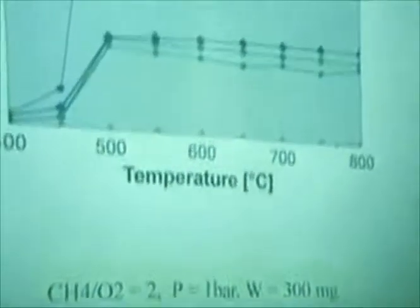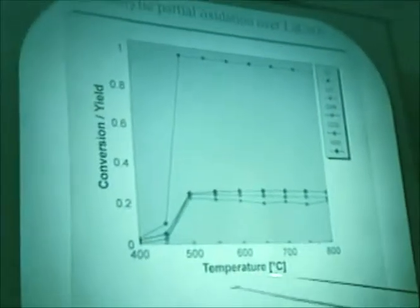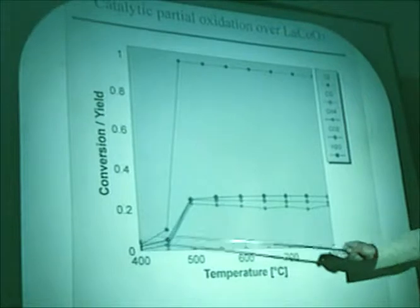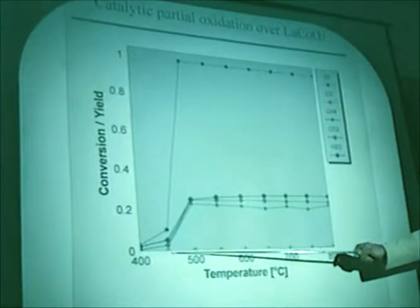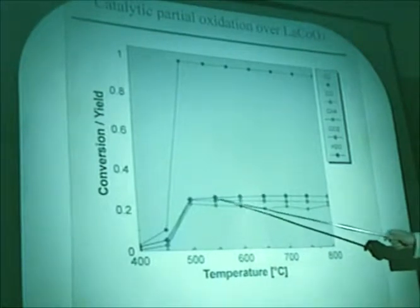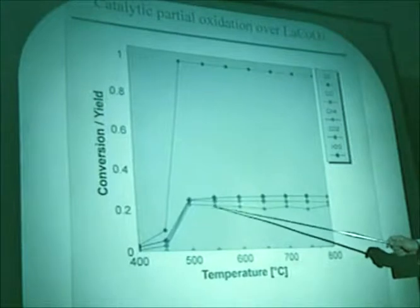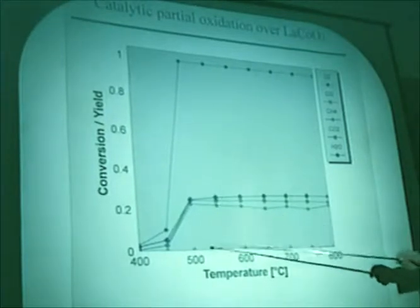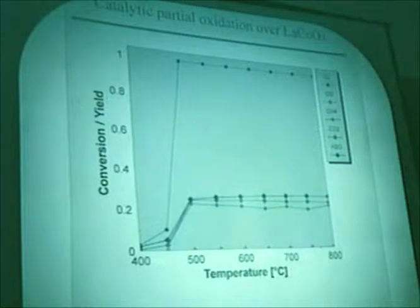To show that not all mixed oxides are good partial oxidation catalysts, I first show results for a lanthanum cobaltate perovskite catalyst. Plotting conversion yield versus temperature, the reaction starts at about 400°C and lights off at about 450°C to complete oxygen conversion. All products obtained are CO₂ and water, with only partial methane conversion, and CO is actually not present. So this is a good combustion catalyst, but not a partial oxidation catalyst.